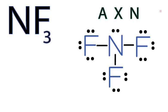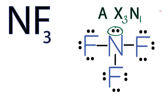In AXN notation: A is going to be the nitrogen in the center; X is the number of atoms — we have three fluorine atoms; and N is going to be the lone pair of electrons — we have one lone pair. So we have AX3N as our molecular geometry designation.